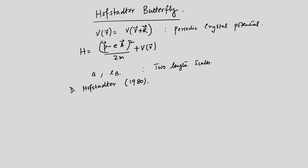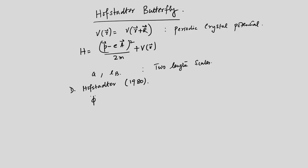Hofstadter solved what is called the Harper equation. He demonstrated that for commensurate values of the flux φ/φ₀, where φ₀ = h/e is the quantum of flux, if this becomes of the form P/Q where P and Q are co-prime integers — meaning there is no common factor between them — then the single-particle Bloch bands split into Q sub-bands, and these sub-bands are themselves P-fold degenerate.